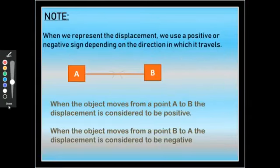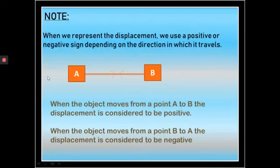Note: when we represent displacement, we use a positive or negative sign depending on the direction of travel. When the object moves from point A to B, displacement is considered positive. When the object moves from point B to A, the displacement is considered negative.